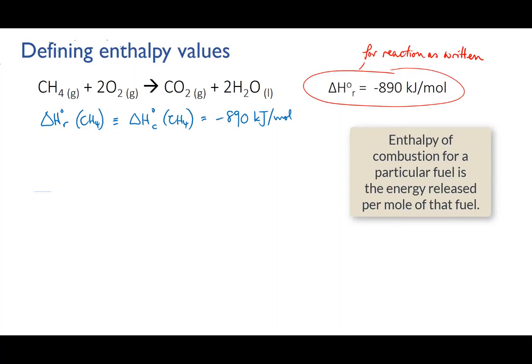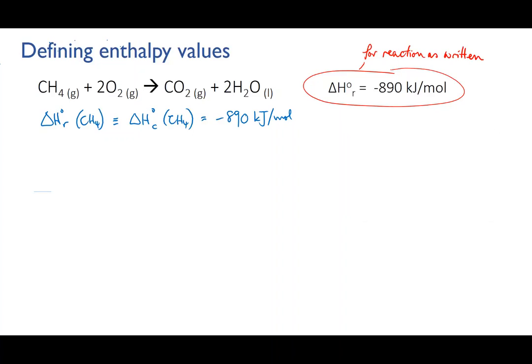However, if we were instead interested in the energy as a function of the amount of oxygen that was used, we would have to do an adjustment. 890 kilojoules of energy is released for every two moles of oxygen used in this process, so the enthalpy value could also be expressed as delta Hr with respect to oxygen, which would be 890 divided by 2, minus 445 kilojoules per mole of oxygen.